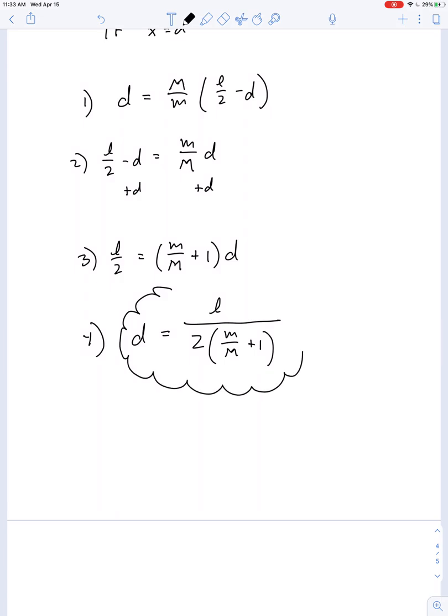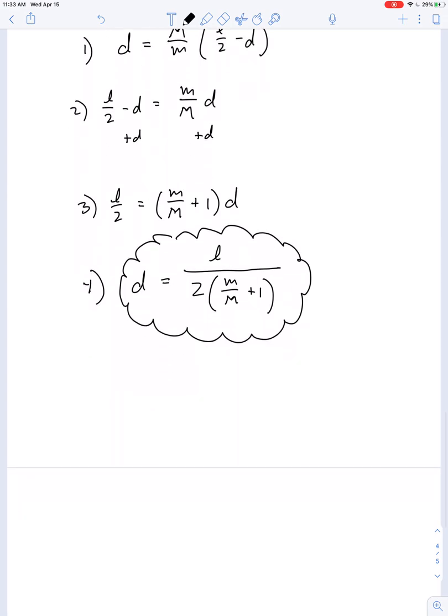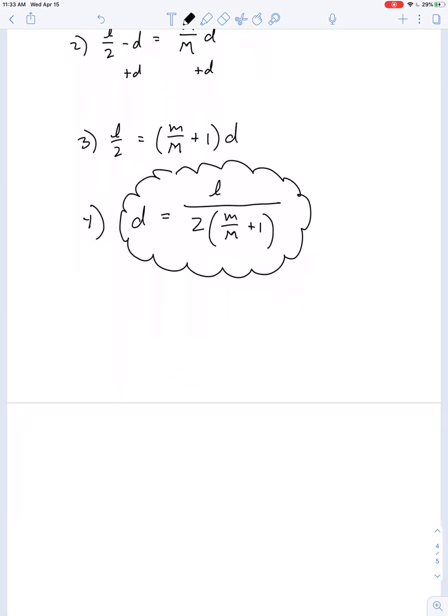Okay now I want you to think about what this result suggests. Let's take some ridiculous cases. So let's imagine the case where the person is so light that we can say their mass is practically zero compared to the mass of the whole log.